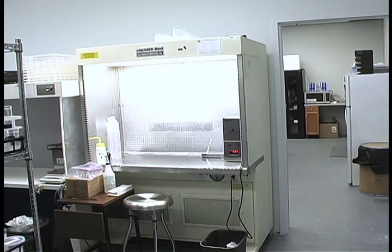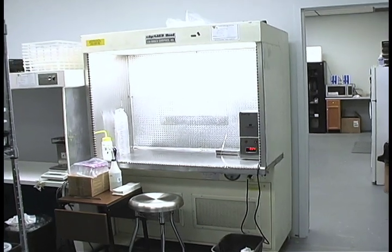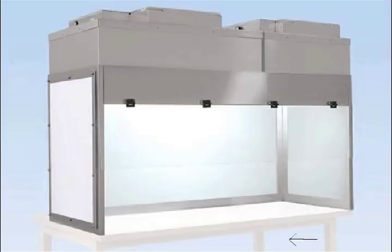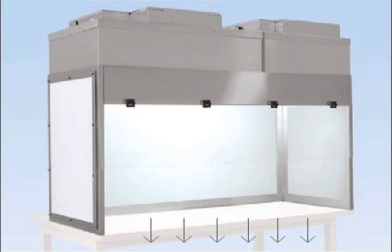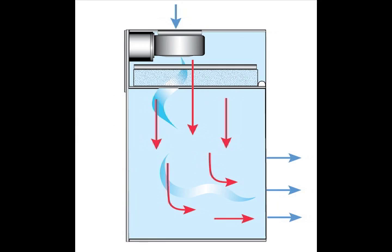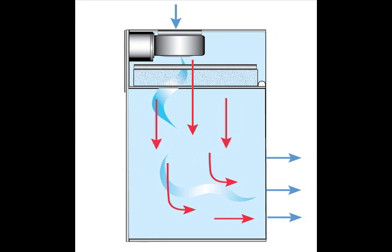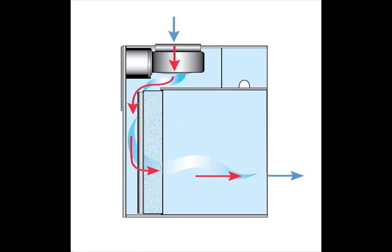A horizontal laminar flow unit is designed to remove the particles from the air. Room air is pulled into the top or bottom of the unit and pushed through a high efficiency particulate air, or HEPA, filter with a uniform velocity of 90 feet per minute across the work surface. The air is filtered by the HEPA filter so nothing larger than 0.2 micrometers can pass through, rendering the air sterile. The flow of air from the unit prevents fungal spores or bacteria from entering. All items going inside the unit should be sterile or sprayed with alcohol.